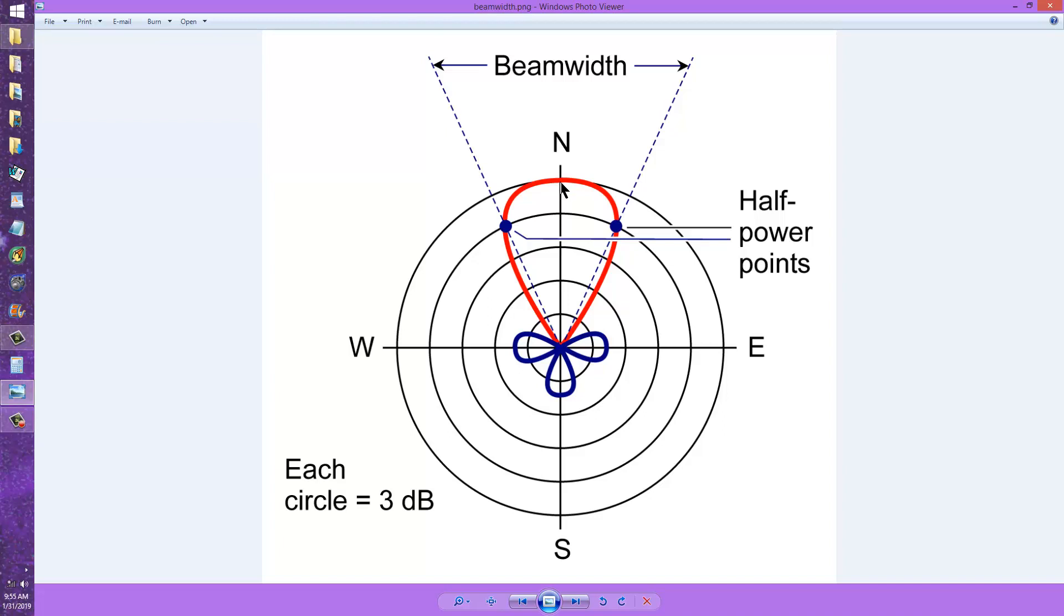The favored direction in this case is north. The antenna is pointed north, and the half power points, with each circle in this graph representing three decibels down, that's half the power of the circle outside it, the half power points are right here, and it looks like maybe this angle is something on the order of 50 degrees or something, maybe around that range. 25 degrees here, 25 degrees here.